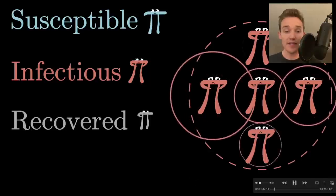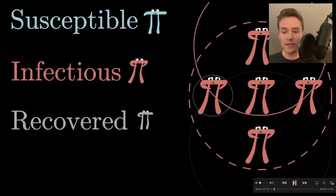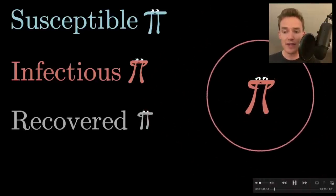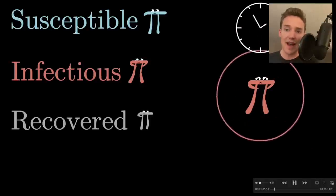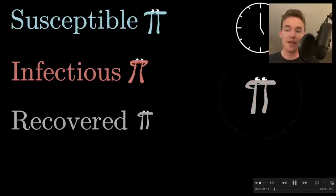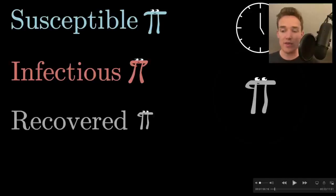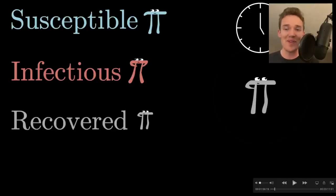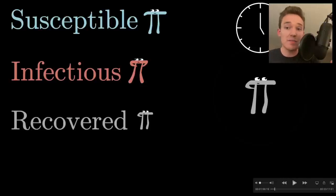To transition from the I-state to the R-state, there are different ways to go about it. What I did is say there's a certain set amount of time that you're infectious, and after that amount of time you transition from infectious to recovered or removed. One thing to note is that we're using proximity as a proxy for all the kinds of interactions you might have with someone.